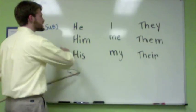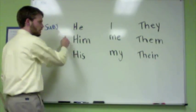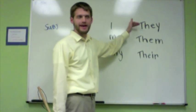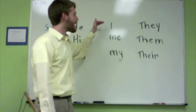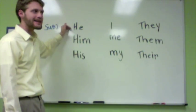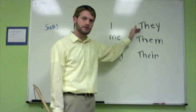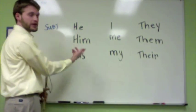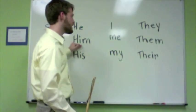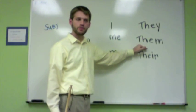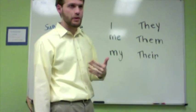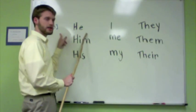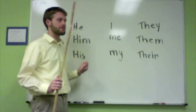What we see is that all these words — he, I, they — are fossils from the way English used to be. There were forms of the word that showed what they did in the sentence. I has to be a subject, he has to be a subject, they has to be a subject — they can't be anything else. In the same way, looking at the second group: him, me, and them — they have to be objects, either direct or indirect objects. They can't be the subject and they can't be possessive.